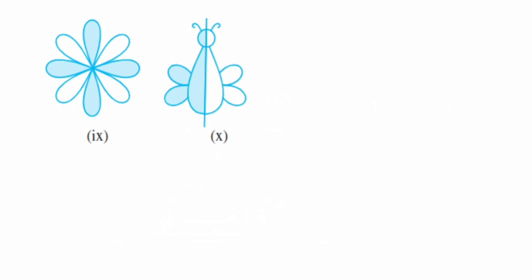The ninth figure is a petal of flowers. Total petals: one, two, three, four, five, six, seven, eight. Out of eight petals, how many are colored? One, two, three, and four — so it is four upon eight. For the last one, it's a design with two equal parts, and only one side is colored, so it's one upon two.